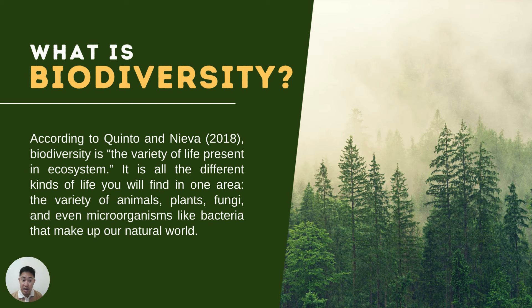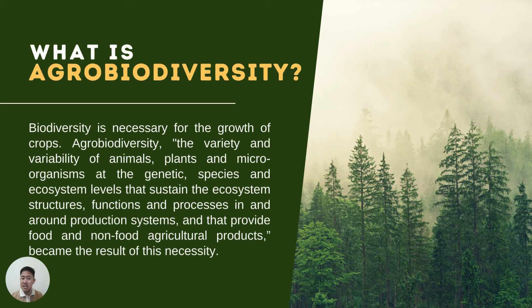One sub-branch of biodiversity is actually agrobiodiversity. Biodiversity is necessary for the growth of crops. Meanwhile, agrobiodiversity is the variety and variability of animals, plants, and microorganisms at the genetic, species, and ecosystem level — sustaining ecosystem structures, functions, and processes in and around production systems, providing food and non-food agricultural products.